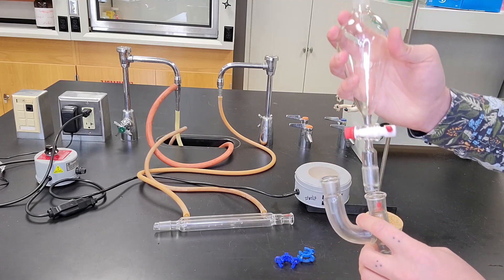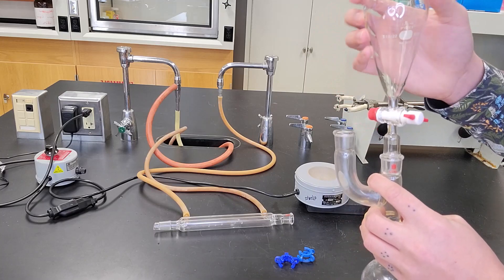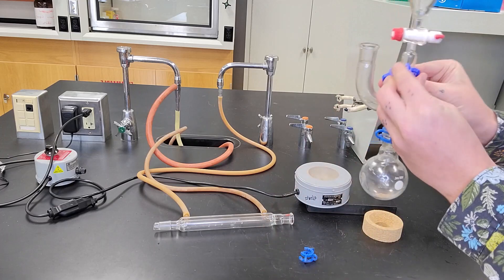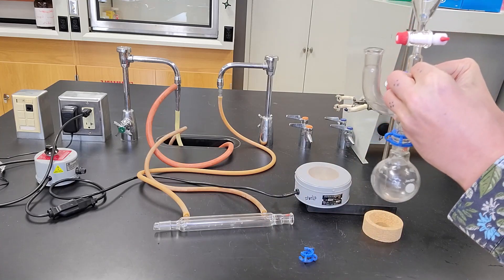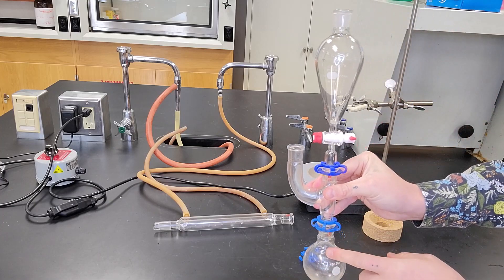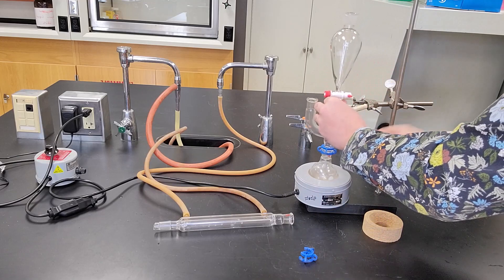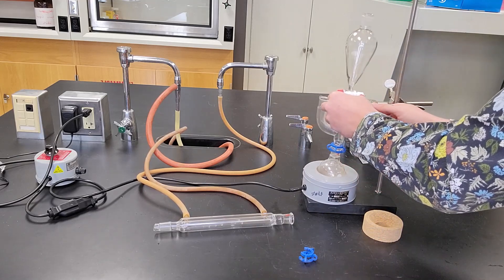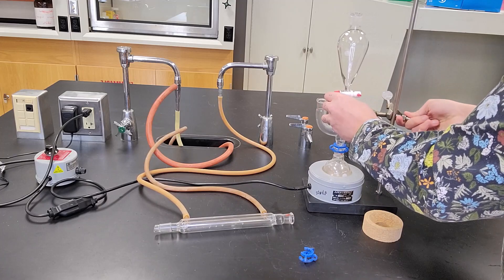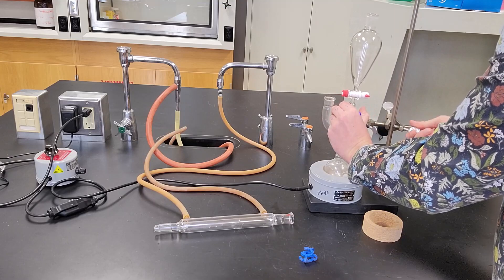So I'm going to take my addition funnel and this is fritted so I can put it on with grease and keck clip it. And I'm going to keck clip this on so we have a tight seal. So we now have the flask with the addition funnel directly above it.